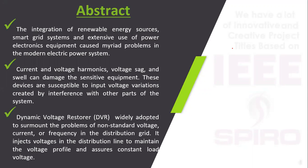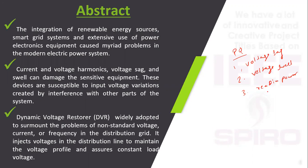In a transmission line, the power quality problem is very common. The main power quality problems are voltage sag, voltage swell, reactive power problem, and harmonic problem.